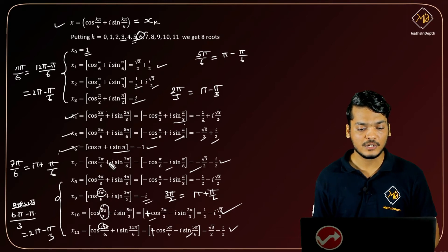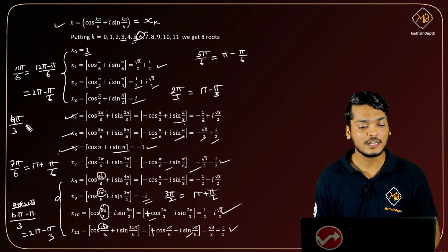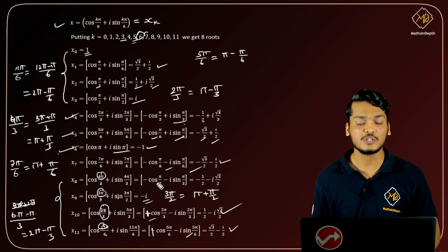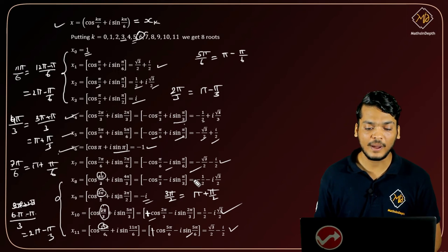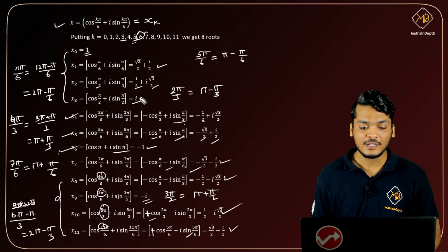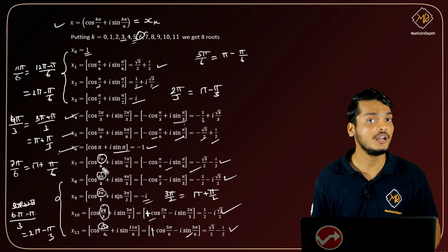For k = 8: we get cos(4π/3) + i·sin(4π/3). Write 4π/3 as π + π/3. Then cos(π + π/3) = -cos(π/3) and sin(π + π/3) = -sin(π/3). In the exam, pay attention to writing the numerator angle value as a multiple of the denominator.